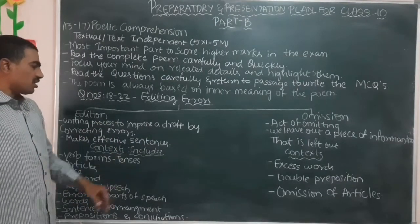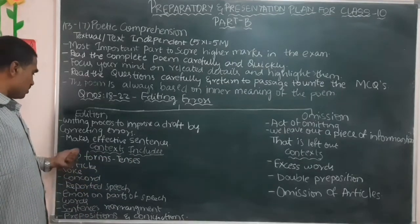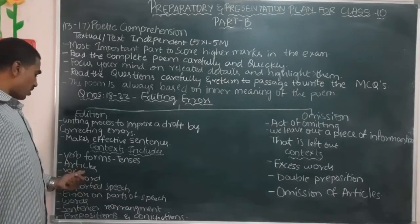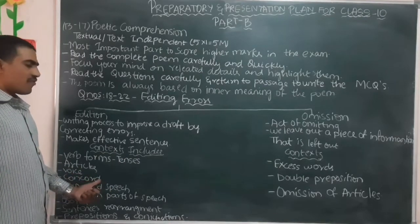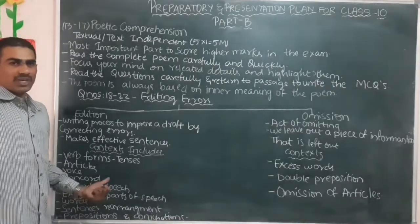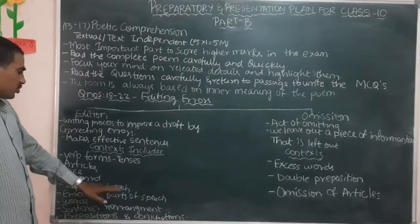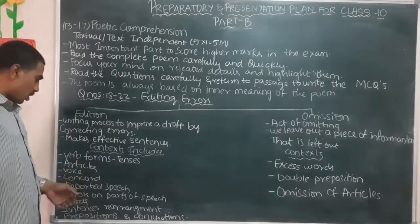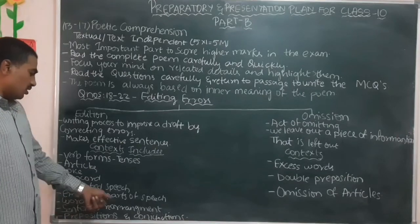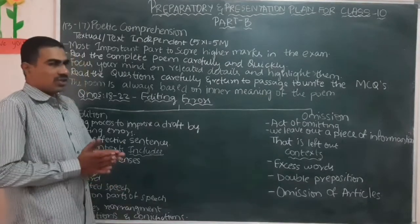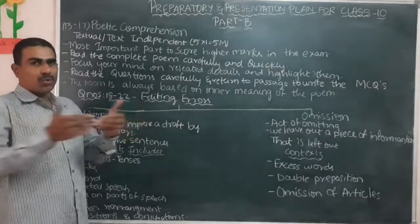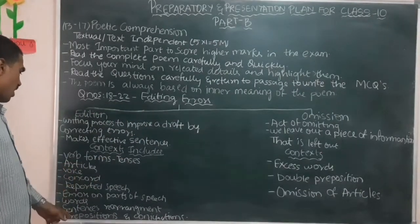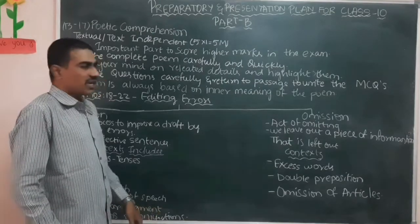The contents included in editing errors are: verb forms, articles, active voice and passive voice, concord — meaning subject-verb agreement — reported speech, errors in direct speech, nouns, adjectives, adverbs, and other remaining things. We also have sentence rearrangement, where jumbled words must be put in the correct order, plus prepositions and conjunctions where wrong ones may be used.